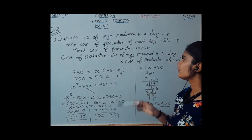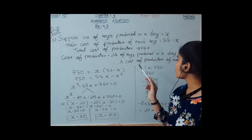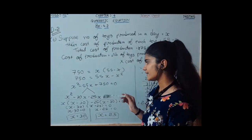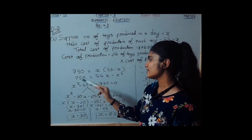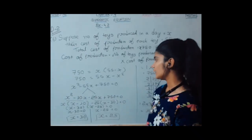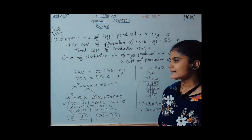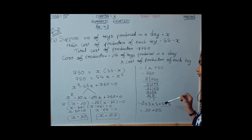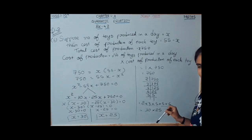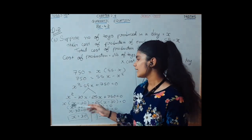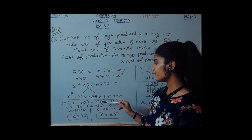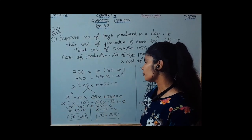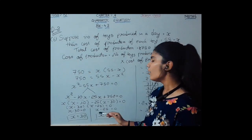Total cost equals number of toys multiplied by cost per toy: x into 55 minus x equals 750. Equating gives x squared minus 55x plus 750 equals 0. Using factorization, 1 into 750 equals 750, with factors 30 and 25. The four-term equation is x squared minus 30x minus 25x plus 750 equals 0, giving roots x equal to 30 and x equal to 25.